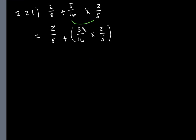So we can go ahead and cross cancel. 5 goes into itself once. 5 goes into itself once. 2 goes into itself once. And 2 goes into 16, 8 times. What does that leave us with? 1 times 1 is 1. And 8 times 1 is 8. And 2 over 8 plus 1 over 8 is 3 over 8.